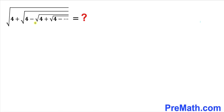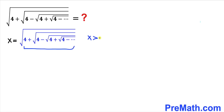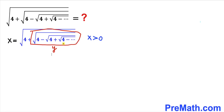Let's get started and focus on this expression. Let's assume that this radical expression equals x. We can see that this whole value is going to be greater than zero, so therefore x is going to be a positive value.